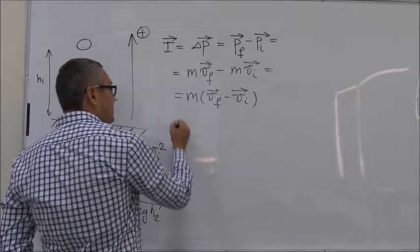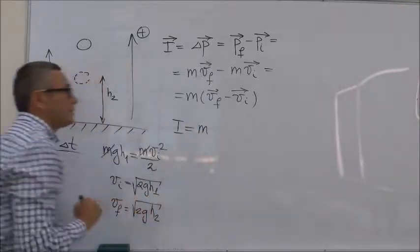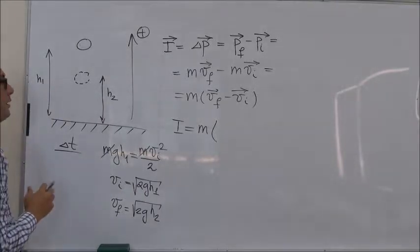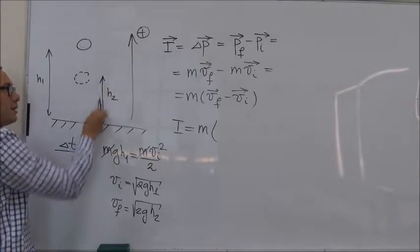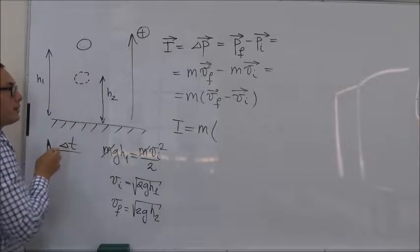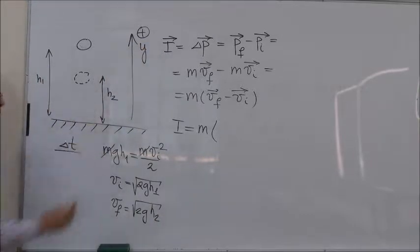So, impulse is equal to M times V final. Remember V final is the velocity of the ball right after the collision and is therefore pointing upwards in the positive direction, in the positive Y direction. So, let's say this is our Y axis, the positive Y direction.